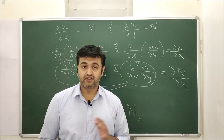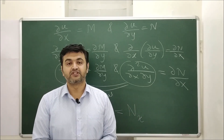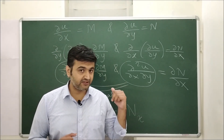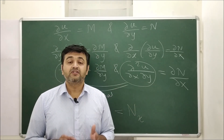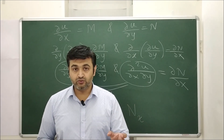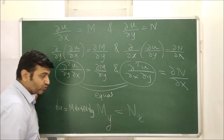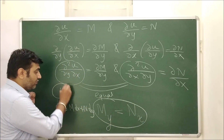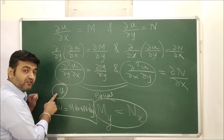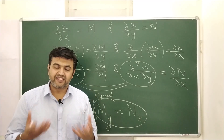Now let's prove the converse: if the condition ∂M/∂y = ∂N/∂x is satisfied, we must prove that equation 1 is an exact differential equation. This side is a constructive proof — such types of proofs are called constructive proofs. We need to show there exists a function u such that du = M dx + N dy, meaning ∂u/∂x = M and ∂u/∂y = N. We have to construct this u given the condition.